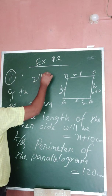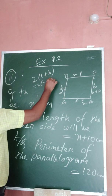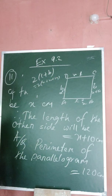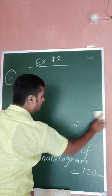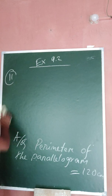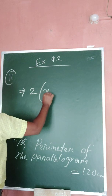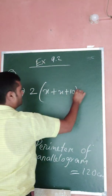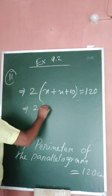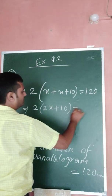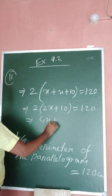The formula for perimeter is 2 into l plus b, so that means 2 into x plus x plus 10. It is given that the perimeter is 120, so therefore 2 into x plus x plus 10 equals 120. That gives us 2 into 2x plus 10, which equals 4x plus 20.